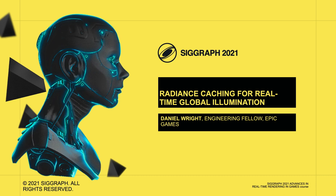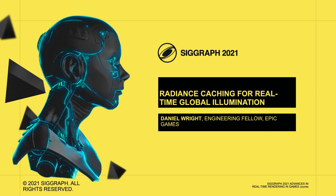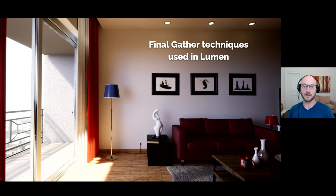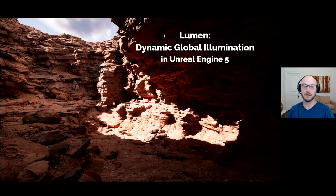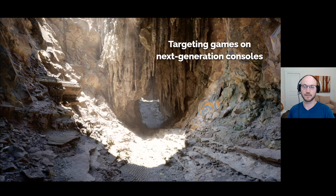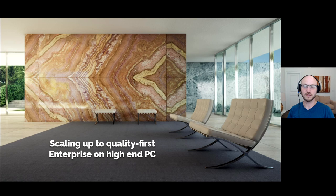Hi, I'm Daniel Wright, and today I'm going to talk about using Radiance Caching to solve real-time global illumination. I'm going to talk about more than just Radiance Caching though — I'm going to present an entire final gather. This final gather is used in what we call Lumen, our dynamic global illumination system in Unreal Engine 5. Lumen is targeting games on next-generation consoles and also has to scale up in quality to Enterprise.